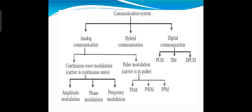The tree structure of communication can be divided into three types: analog communication, hybrid communication, and digital communication. Digital communication techniques can be divided into three parts: PCM (pulse code modulation), delta modulation, and DPCM.